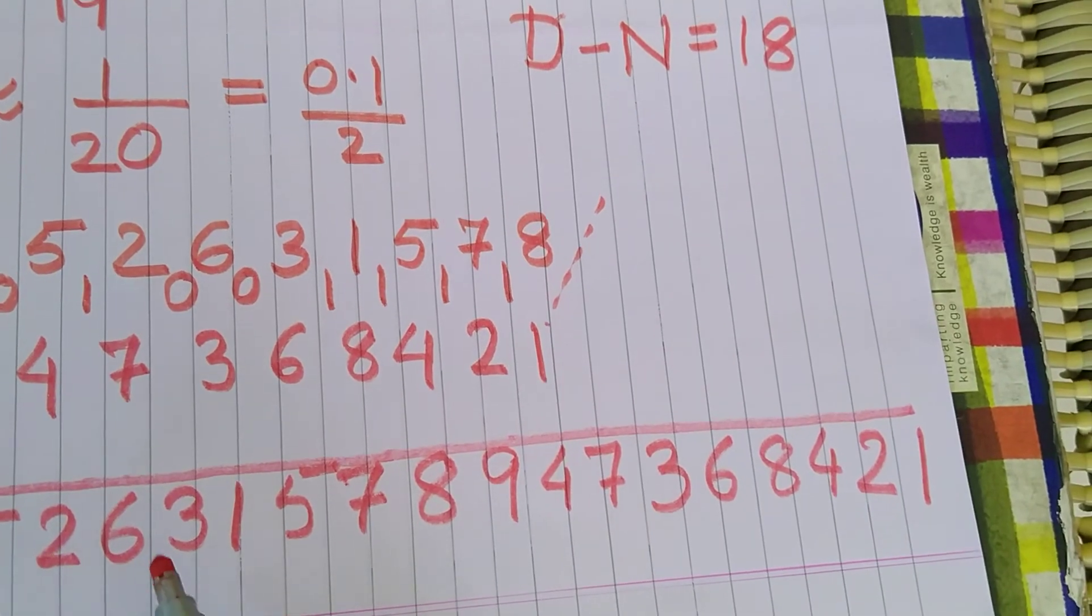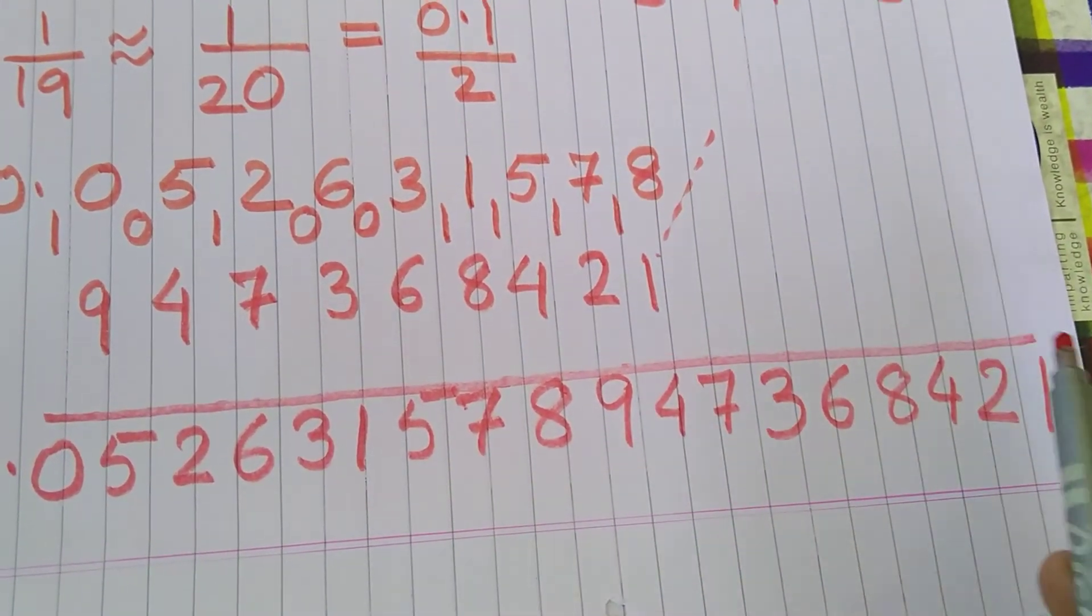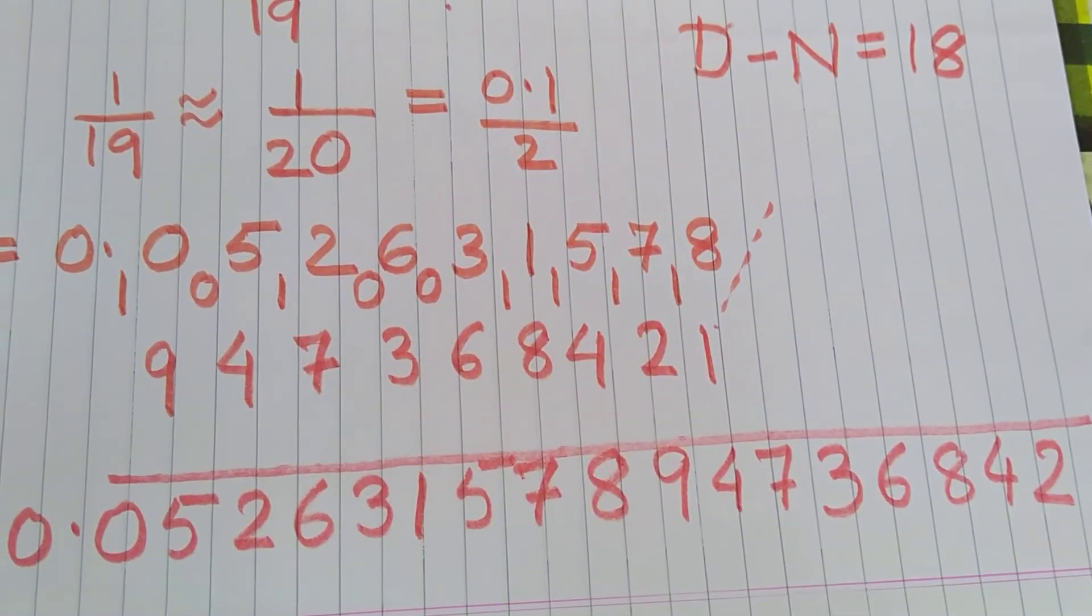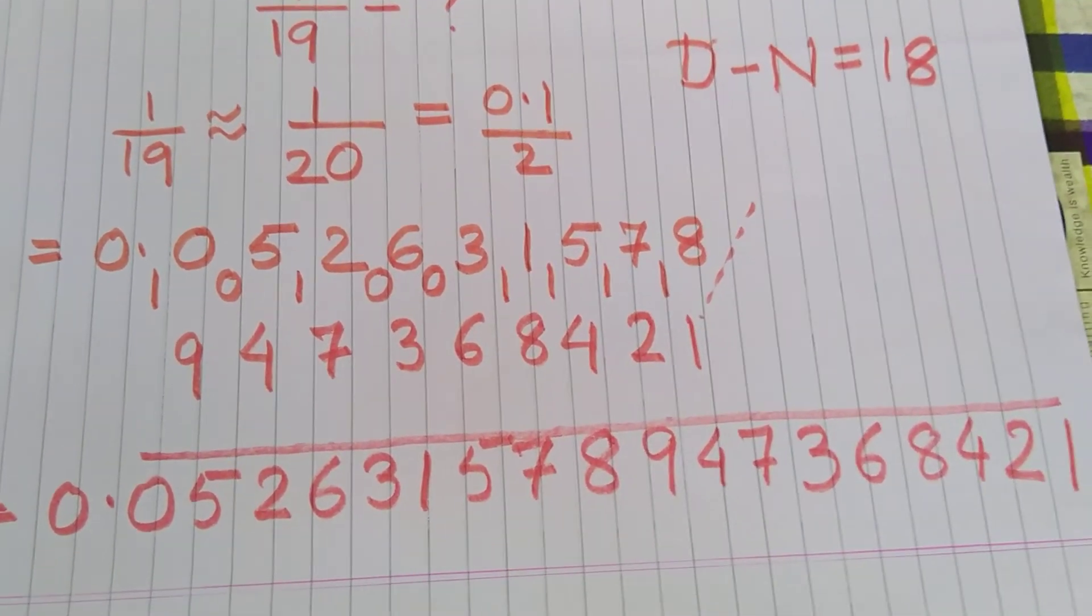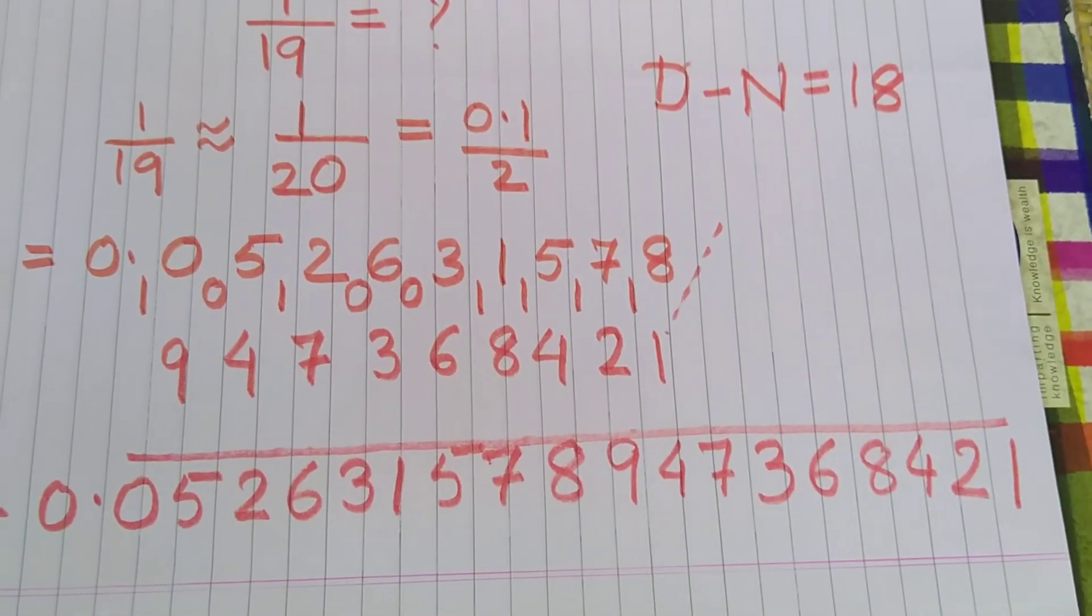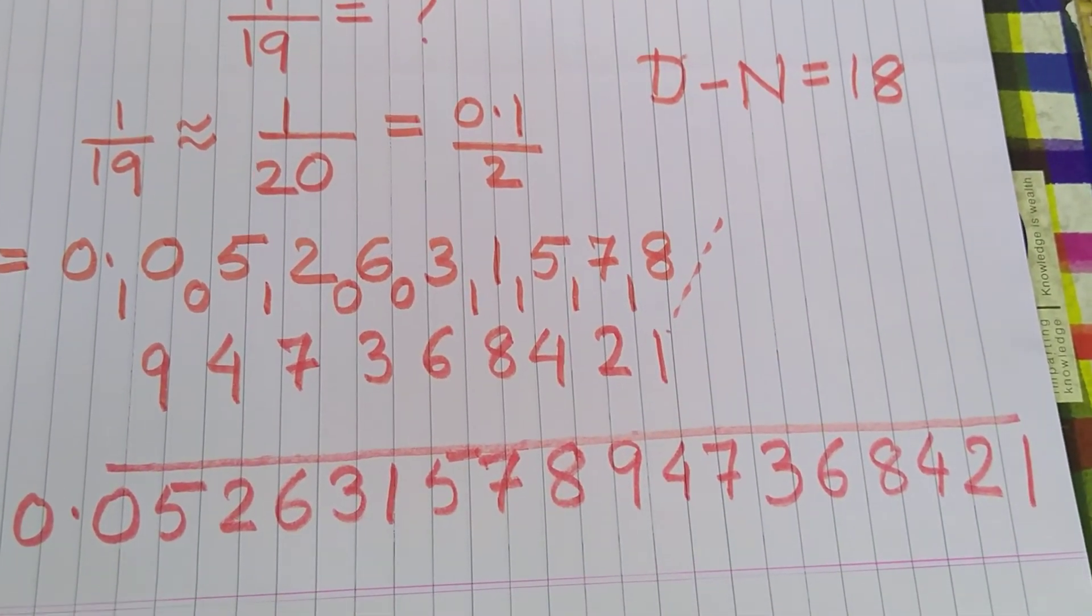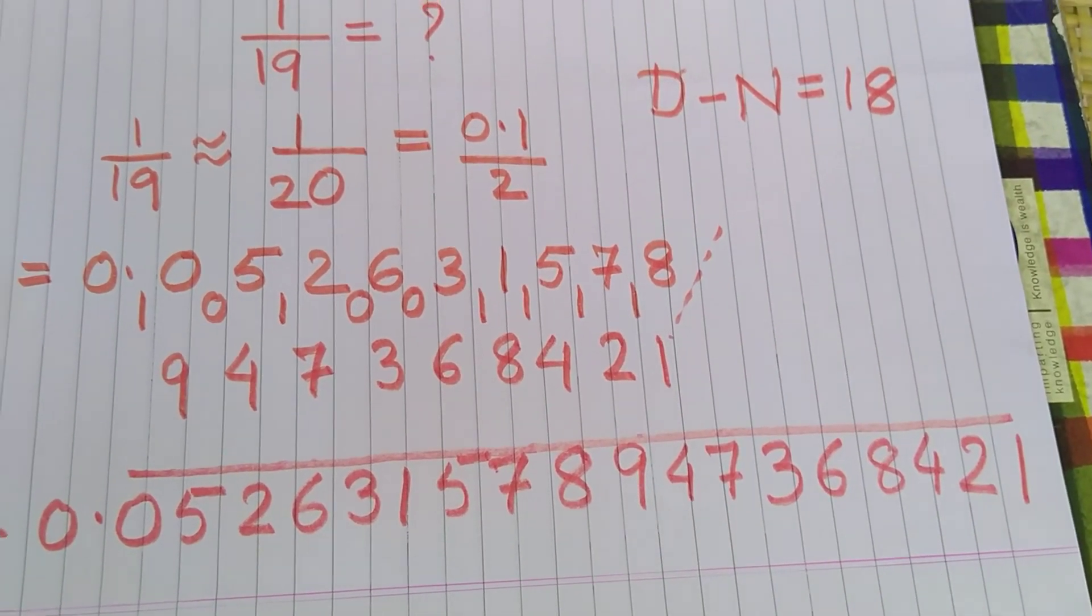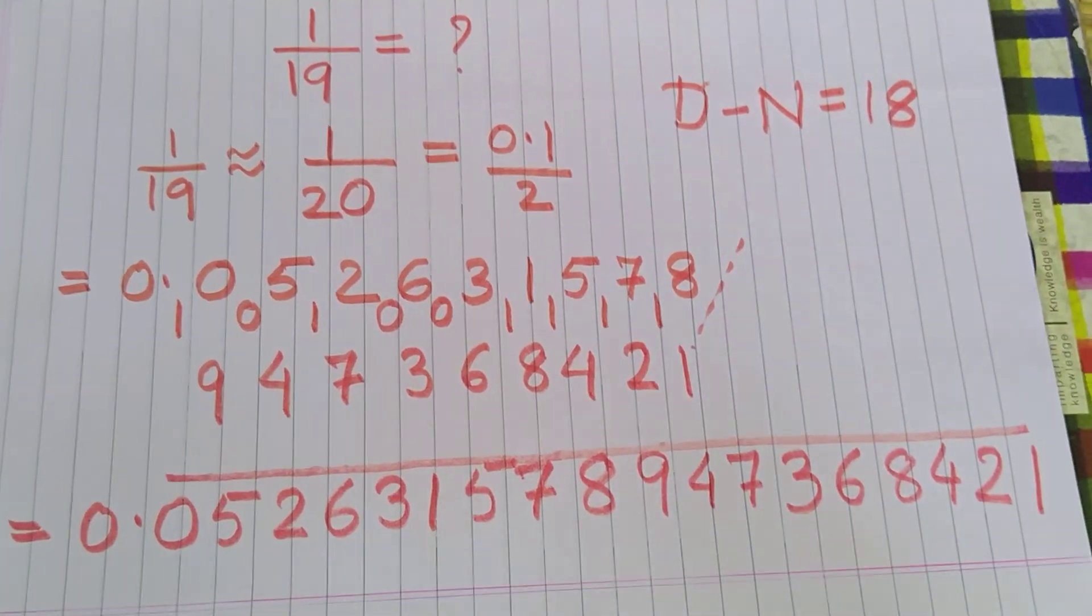Now this entire becomes a bar, that is after this it would repeat as again 0 5 2 6, the entire group repeats. So this is the decimal representation of the number 1 by 19. So see in a very simple way we have found the decimal representation of 1 upon 19. Few more cases we'll discuss in the next video. If you like please give a thumbs up sign and share and subscribe my channel. Thank you.